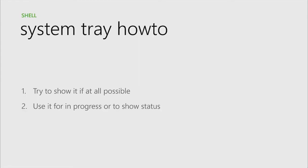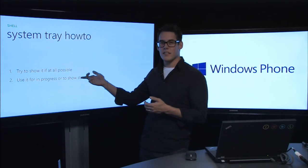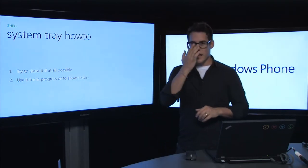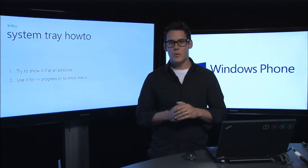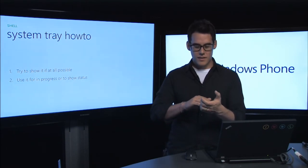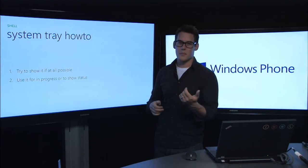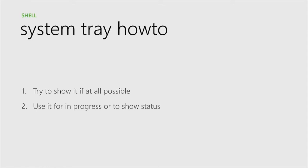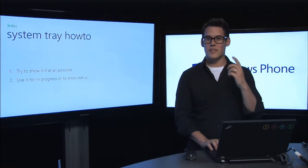A couple of system tray how-tos: try to show it if at all possible. It's easy to love your design and make something that's not really suited for Windows Phone. Make your design around it so it fits nicely. You never want an application in constant use where the user can't even see the time, clock, or battery life. A great use is the browser — by default it's gone for a full-screen browsing experience, but as soon as you tap to expand the address bar, the time and data drop down from the top. You can also use it for progress or to show status — all you need to do is fire off the system tray and push a little text up to the top.